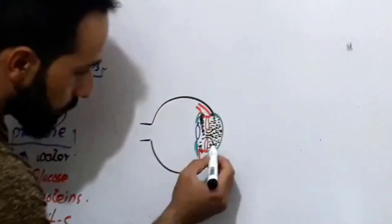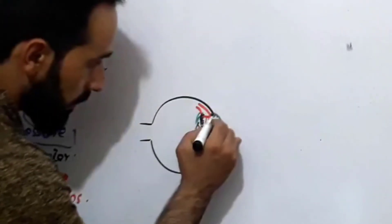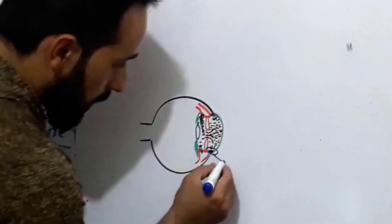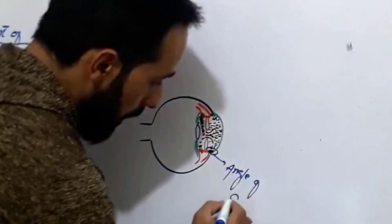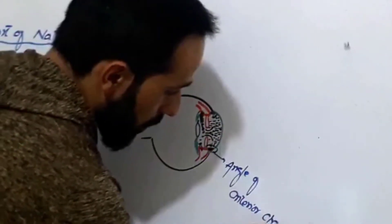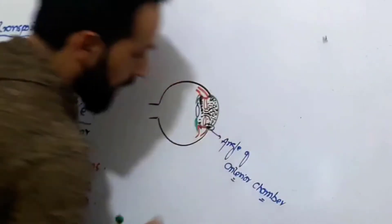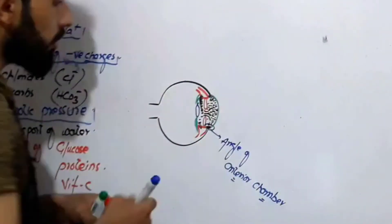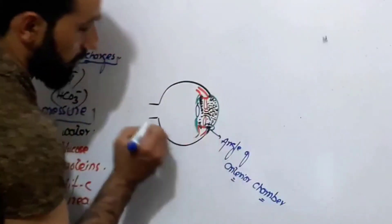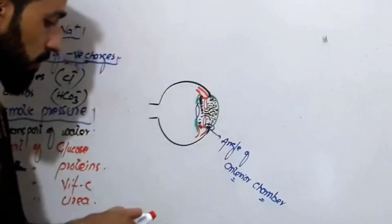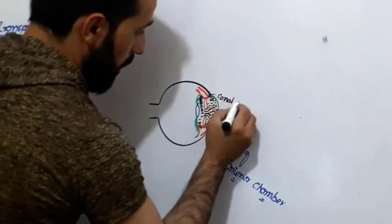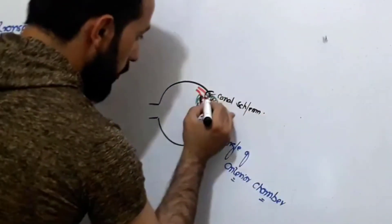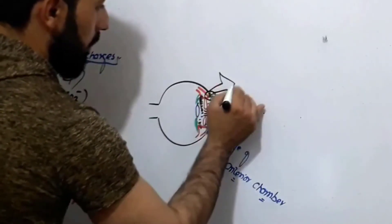In the bigger diagram, we should know from which point the aqueous humor is drained. This important point is called the angle of the anterior chamber, or we call it the iridocorneal angle. This iridocorneal angle contains the drainage system for the aqueous humor, which is called the canal of Schlemm.